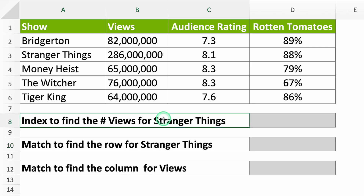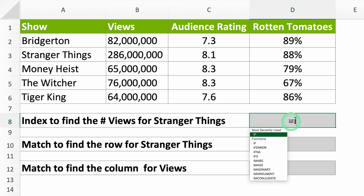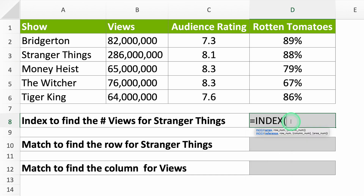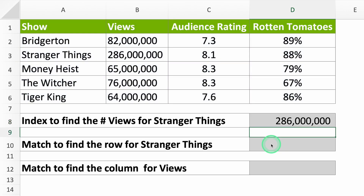For example, we want to find the number of views for Stranger Things. We can see it's in the third row and second column. Type in equals INDEX. It'll ask for three things: 1. Where should it look — pick your whole table. 2. The row number — Stranger Things is in row 3, so type 3. 3. The column number — views are in column 2, so type 2. Close your formula and press Enter. It shows there were 286 million views.